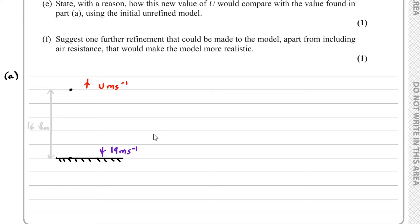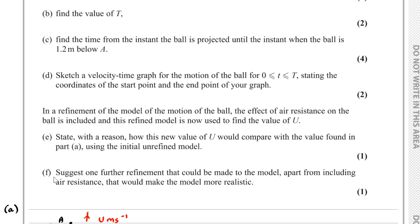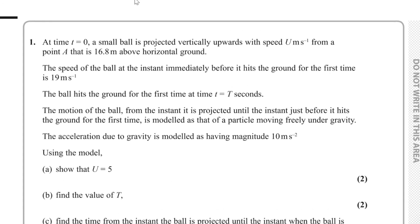We also know the acceleration due to gravity is 10 metres per second squared. So if we take downwards as positive, then we've got 10 metres per second squared. We have U metres per second going up, the distance of 16.8 metres, the speed of 19 metres per second, and the acceleration of 10 metres per second squared.